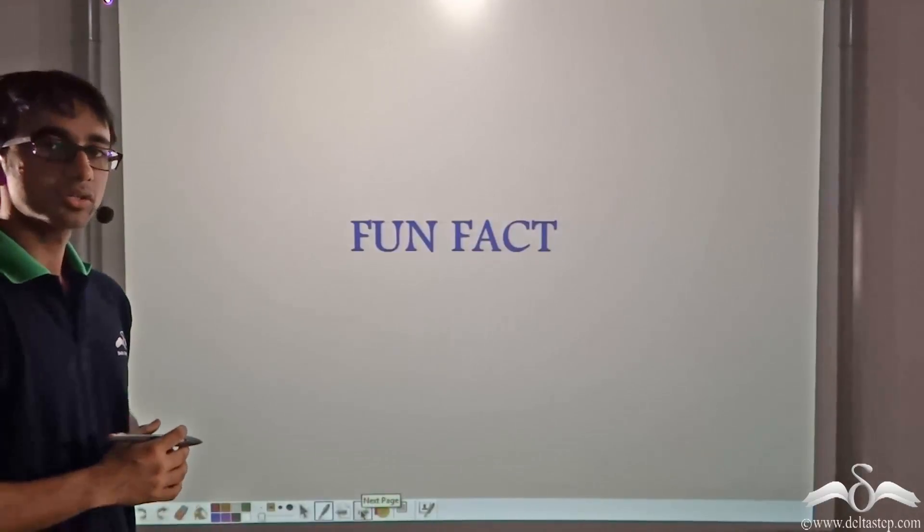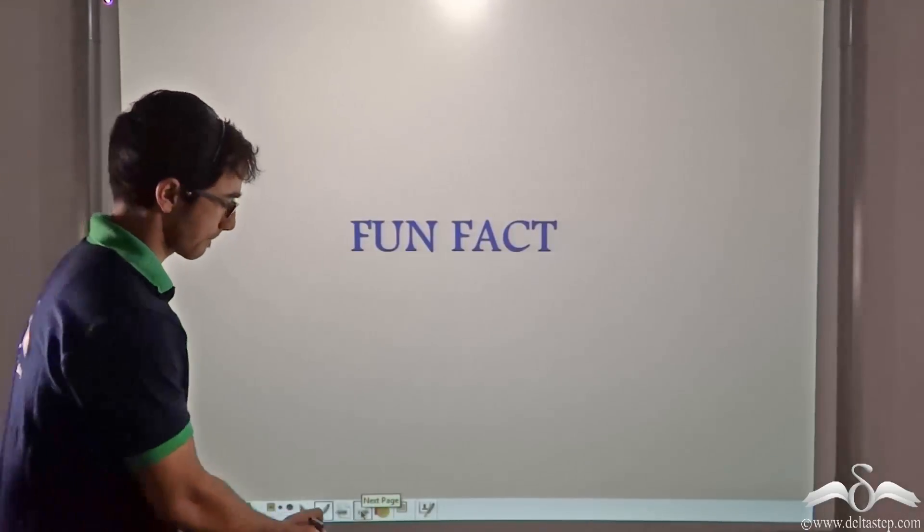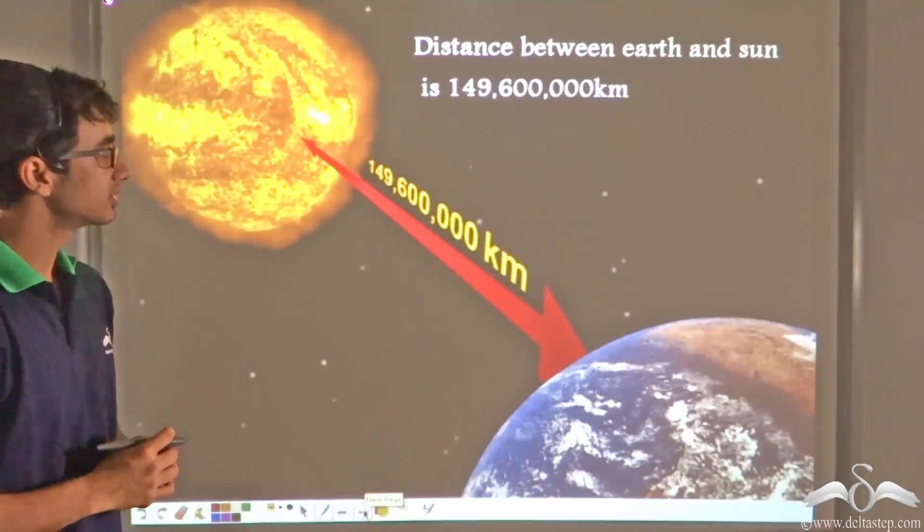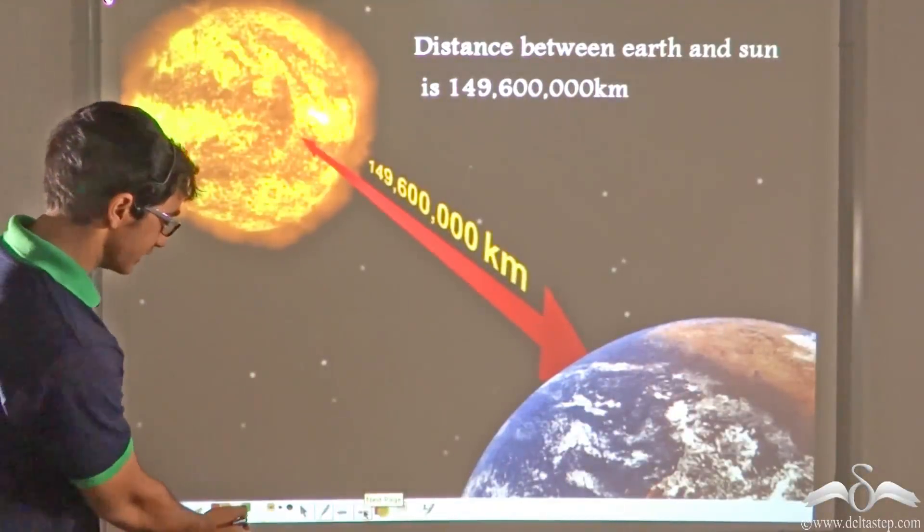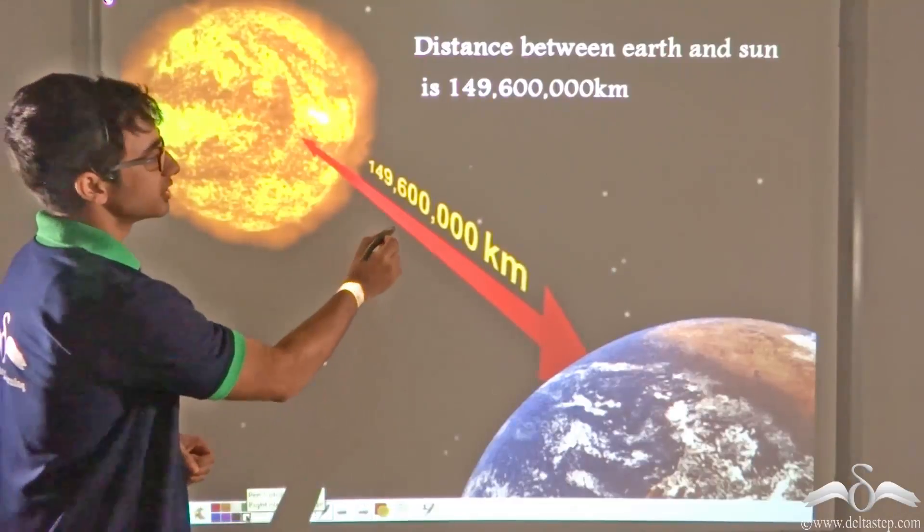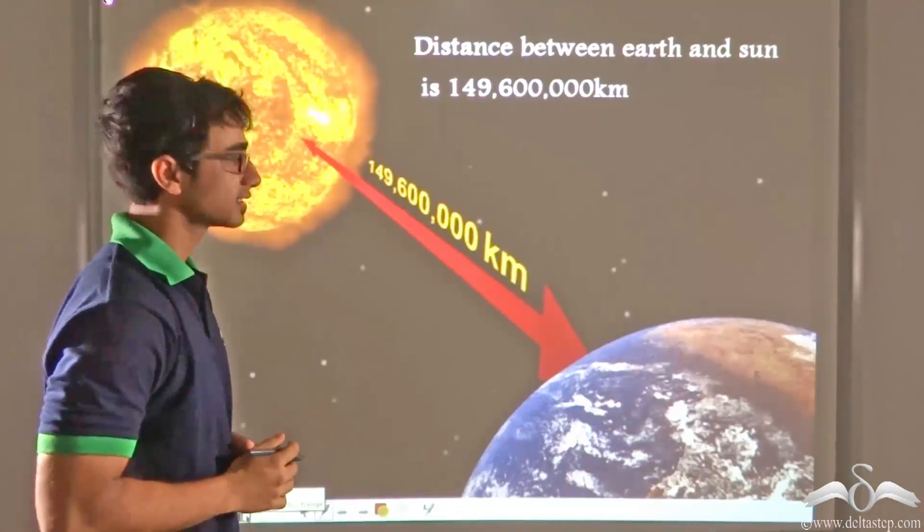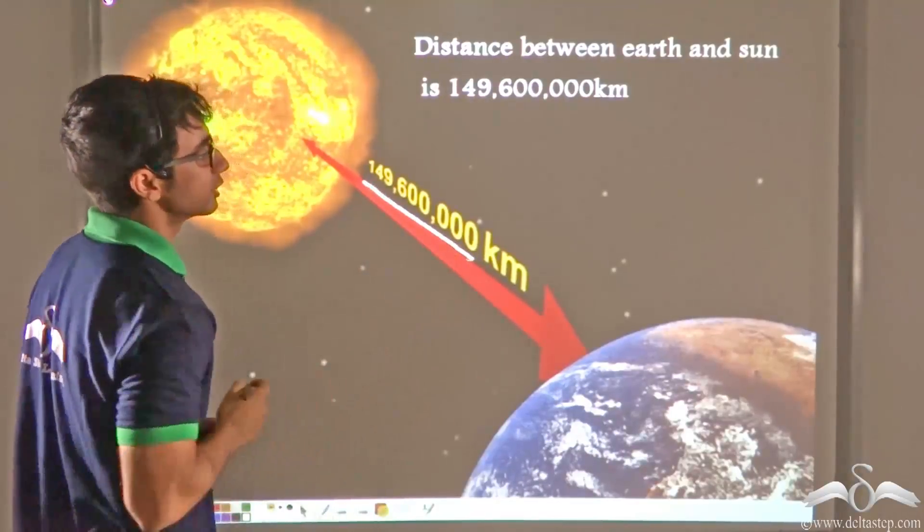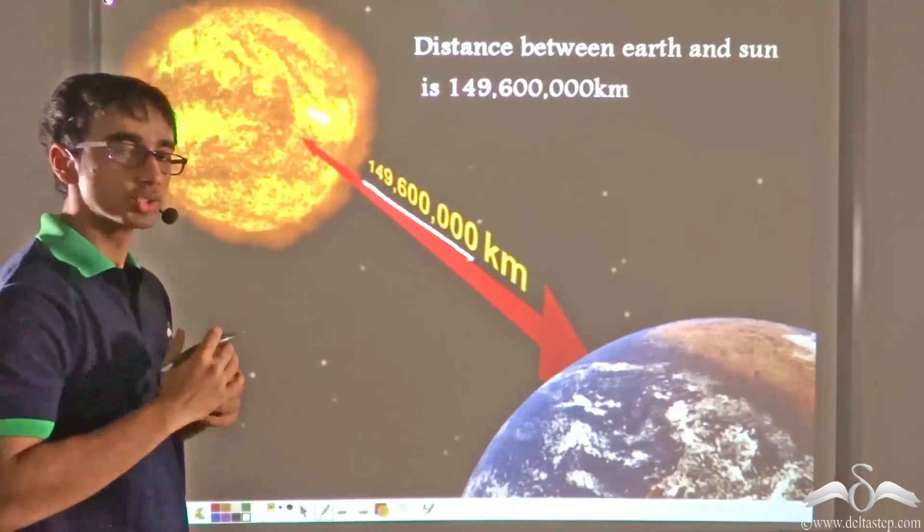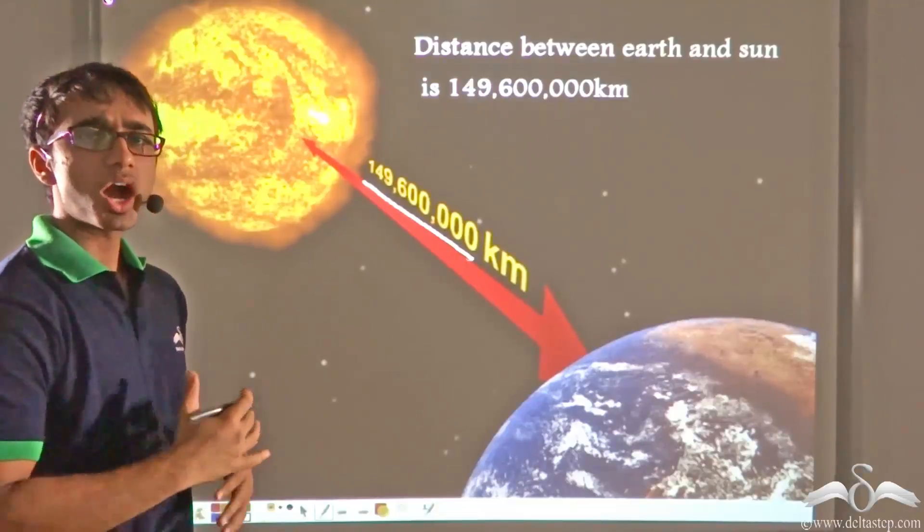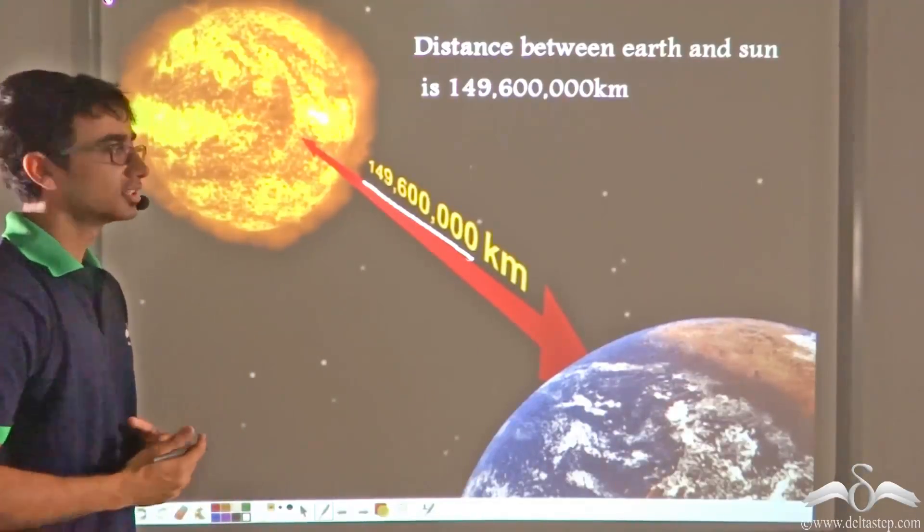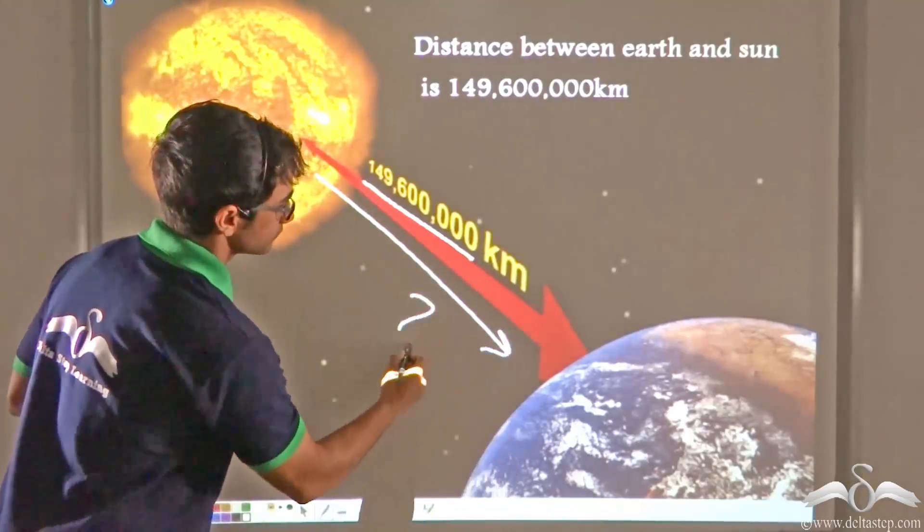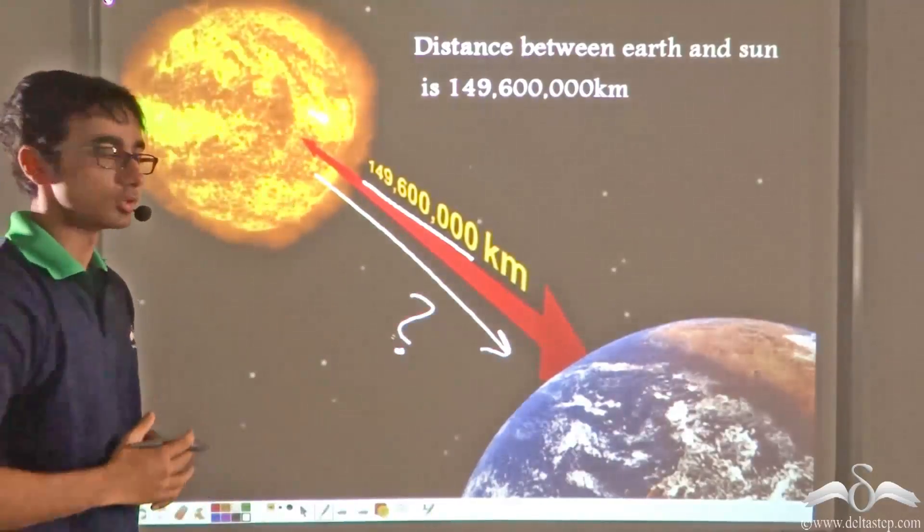Now let us look at a fun fact. The distance of the sun from the earth is 149,600,000 kilometers. That is a huge distance, right? So how long do you think it takes light to reach the earth from the sun? Let us find out.